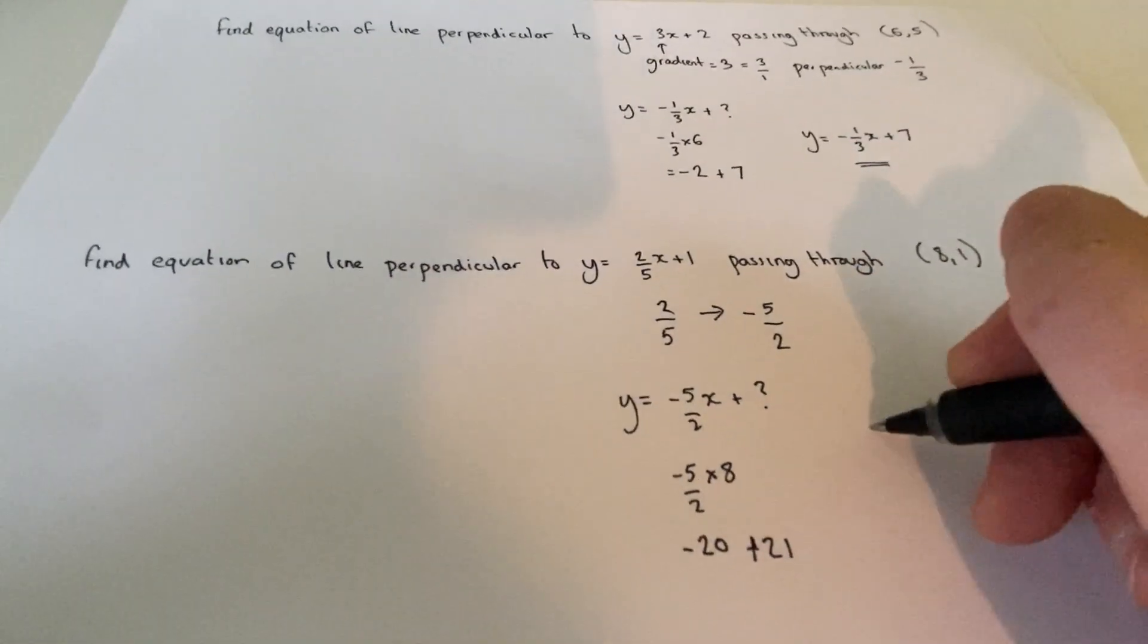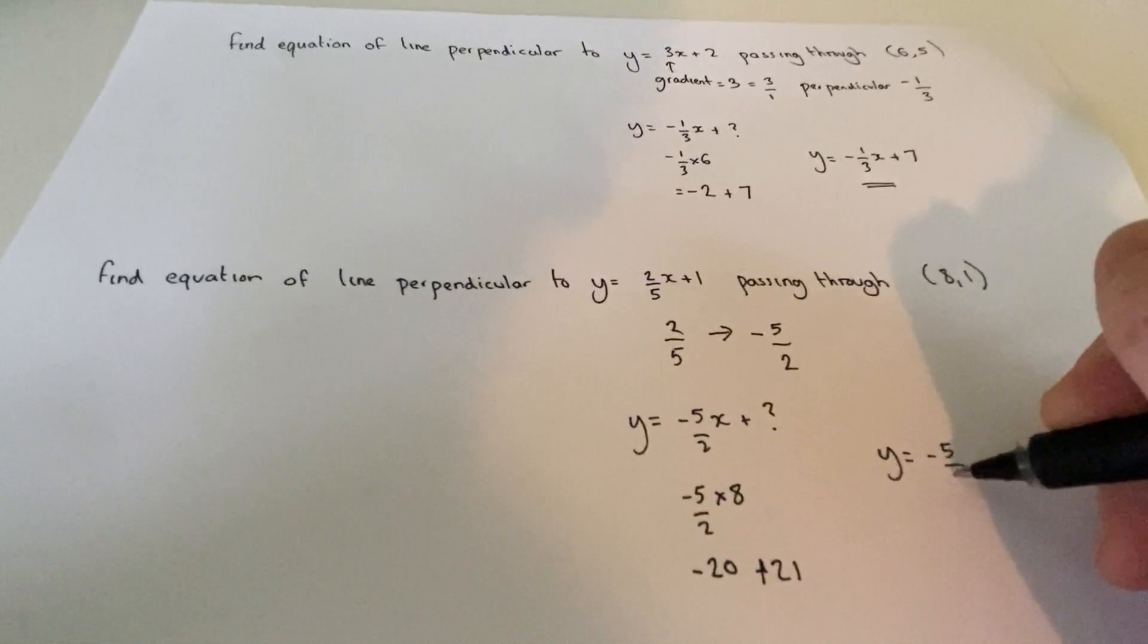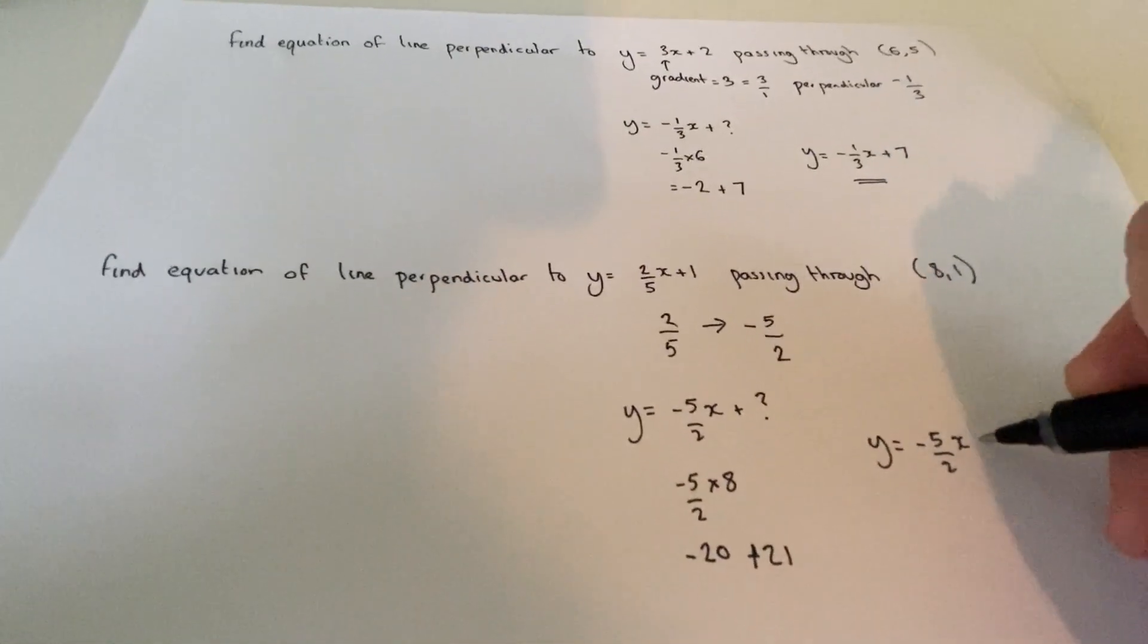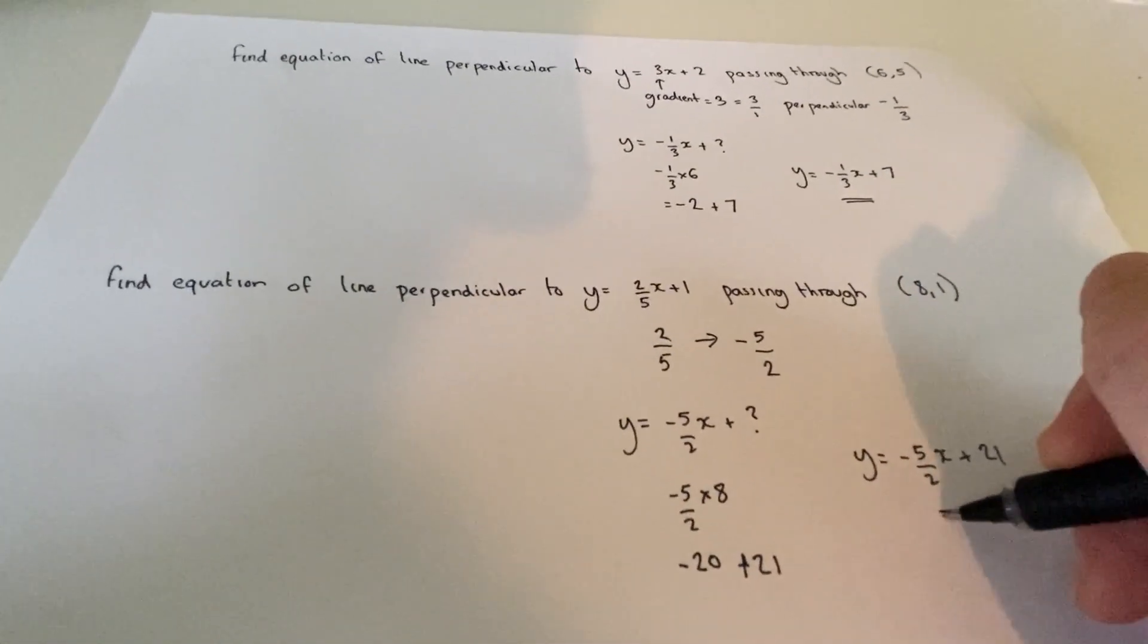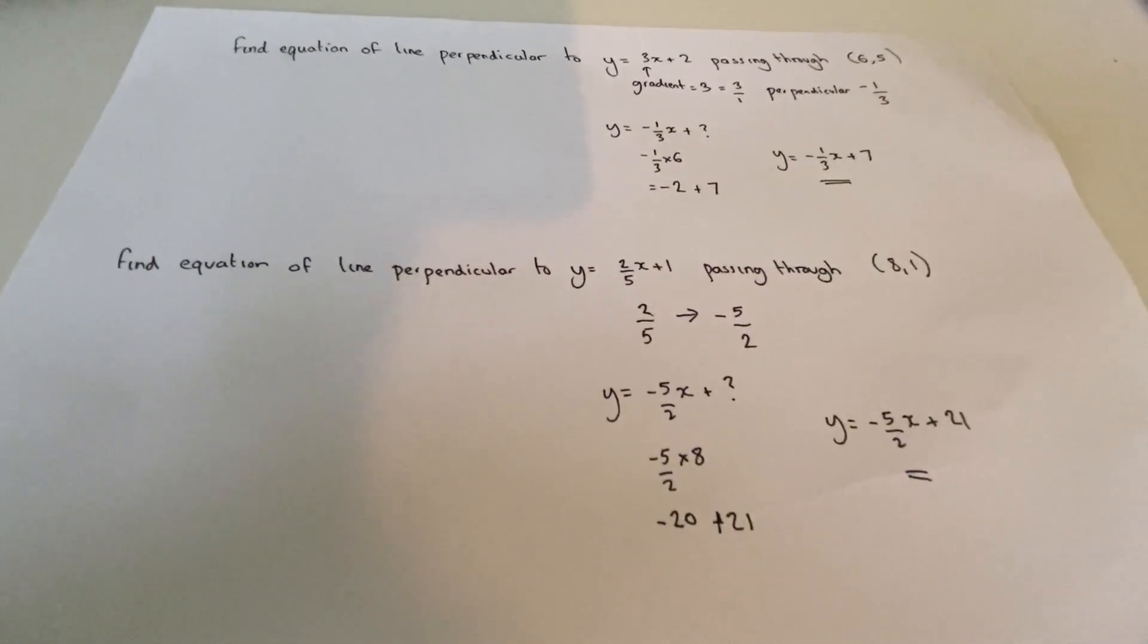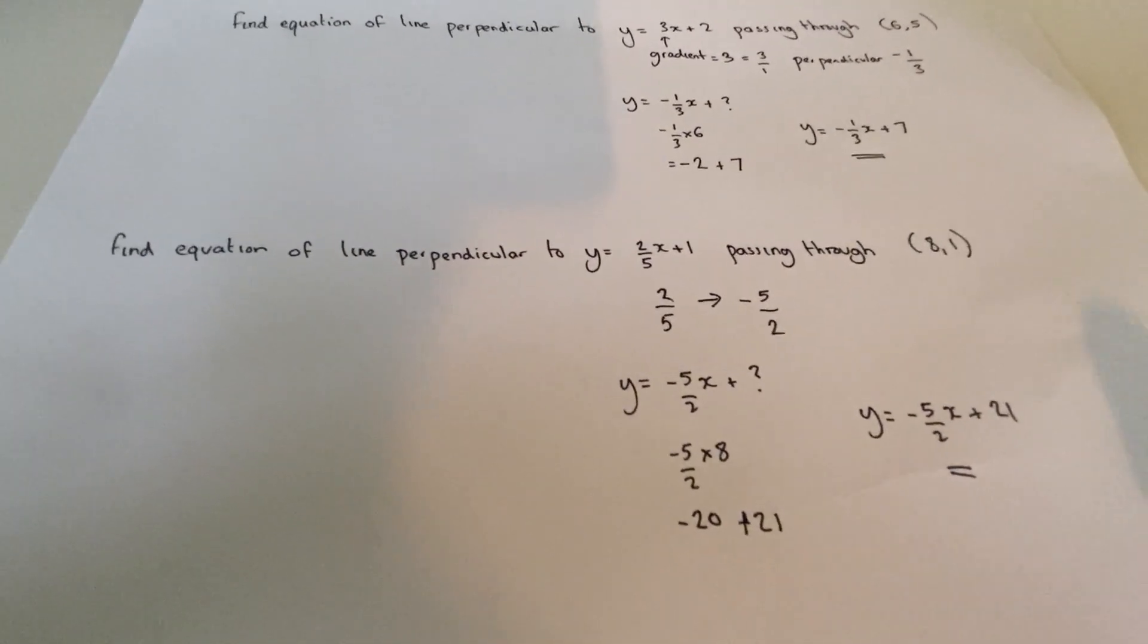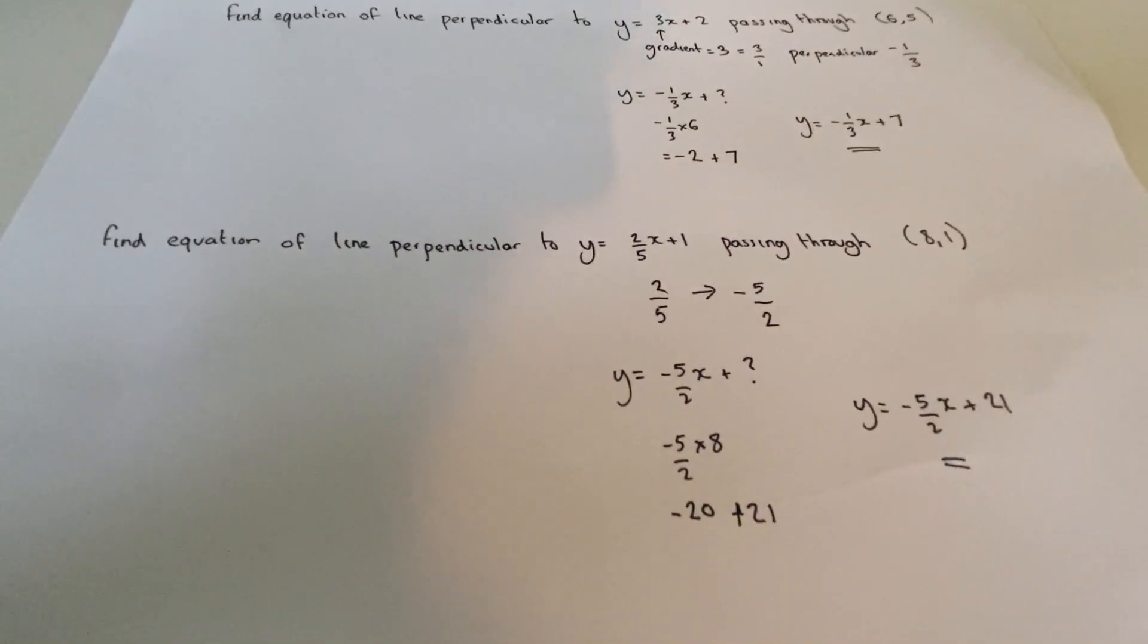So the equation becomes y equals minus 5 over 2x plus 21. And this is the equation of the perpendicular line passing through the coordinate 8, 1.